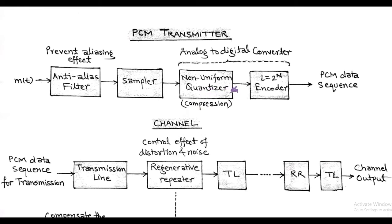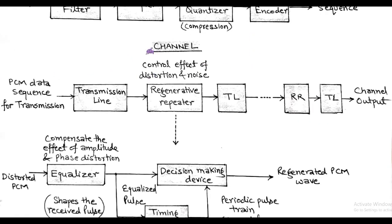After quantization, each quantum or step size is encoded into a unique code of 0 and 1 by using L = 2^N. At the output of encoder, we get a sequence of PCM data. This sequence of PCM data is transmitted via a channel using transmission line.